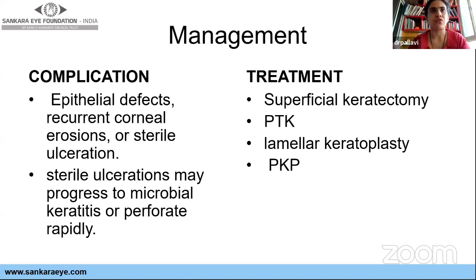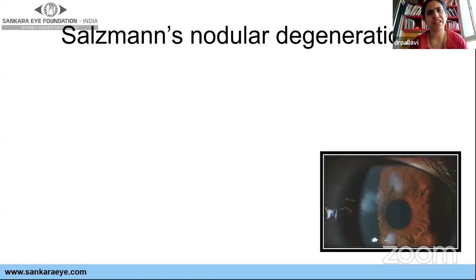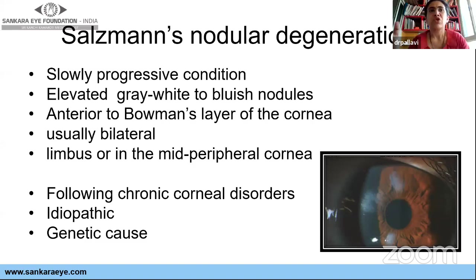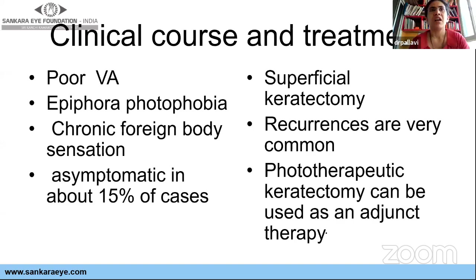Salzmann's nodular degeneration is another pathological degeneration — progressive grayish-white nodules anterior to Bowman's, usually in the periphery and mid-periphery. What's important is it can progressively produce surface problems of watering and redness, and the most commonly associated condition we tend to miss is meibomian gland dysfunction. It usually occurs following chronic corneal diseases like recurrent phlyctens, VKC, or trachoma, but can also be idiopathic. Superficial keratectomy can be done, but recurrence is known. PTK can be done as an adjunct, but not as primary therapy.